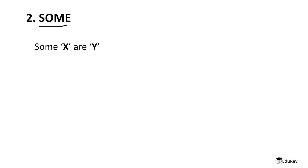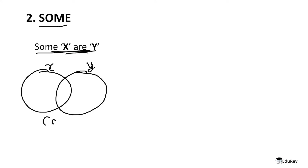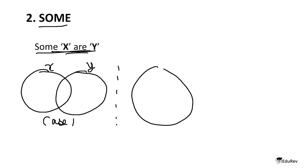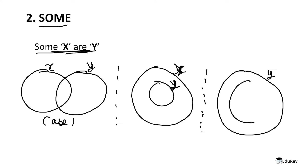Now let's look at another word: 'some'. So here our statement is 'some X are Y'. Let's start drawing Venn diagrams for this. In case one, X and Y partially overlap. In case two, Y is inside X. But there are also more diagrams we can draw for 'some X are Y'. Case three would be X inside Y. Even here some X are Y. Now you must be thinking that this is also a diagram for 'all X are Y', and yes, you are 100% correct. But it is also a valid diagram for 'some X are Y', and the answer is an astounding yes.